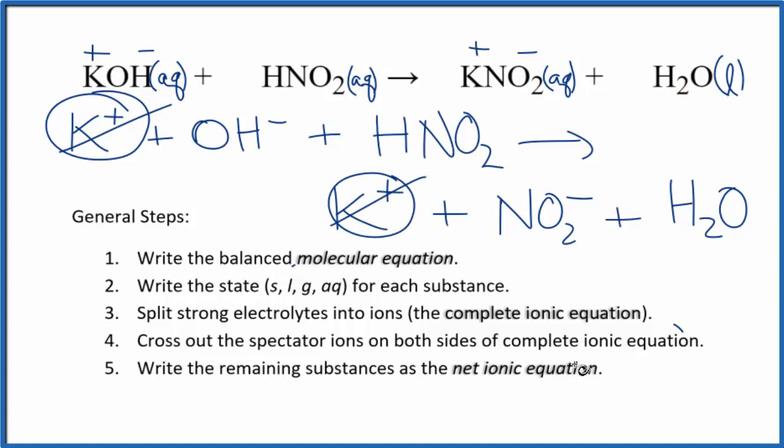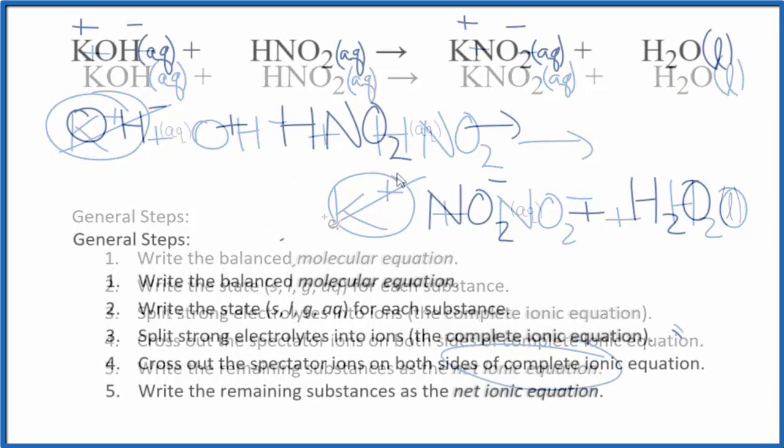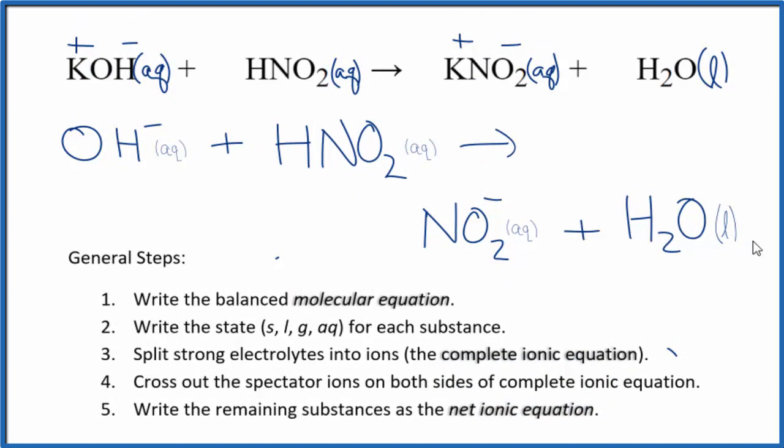Everything else, it's unique, and that is the net ionic equation for KOH plus HNO2. Let me clean it up and add the states in. We'll have our net ionic equation. So this is the balanced net ionic equation for potassium hydroxide plus nitrous acid.